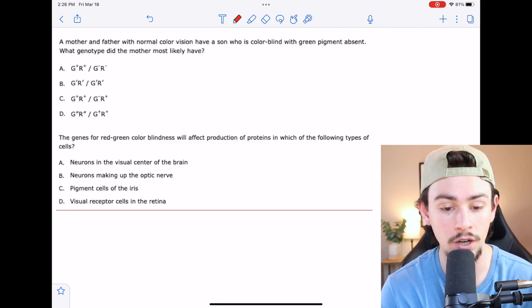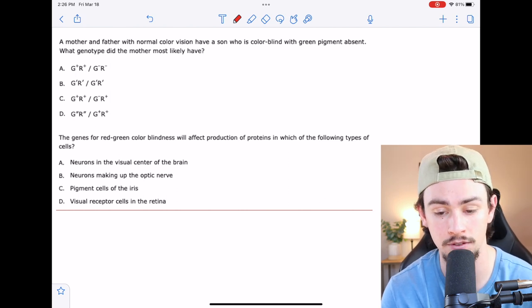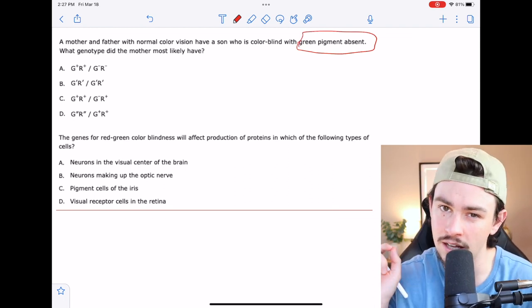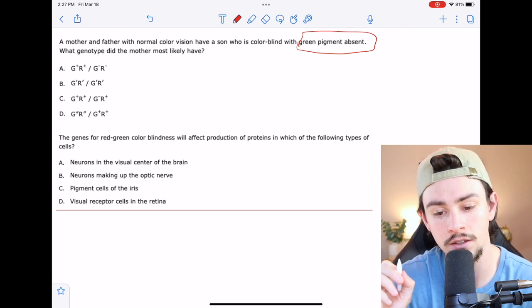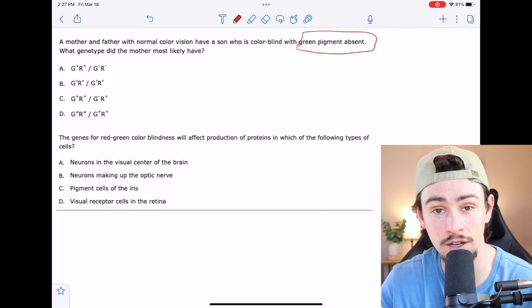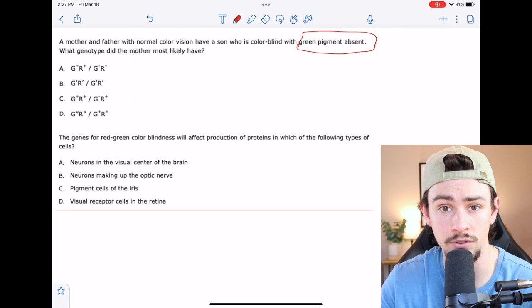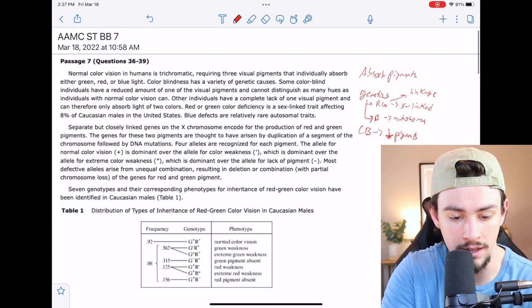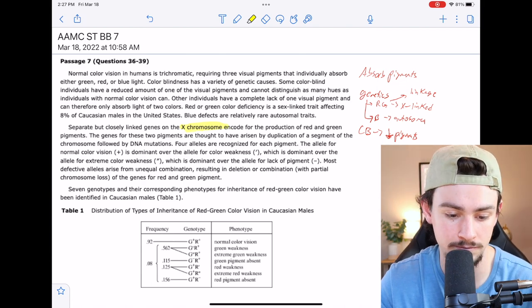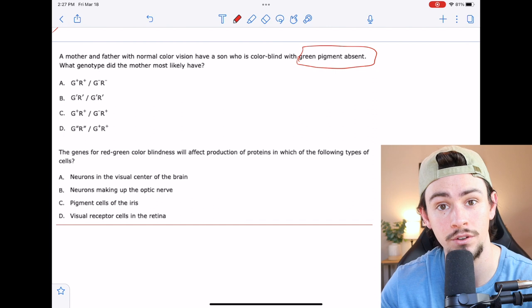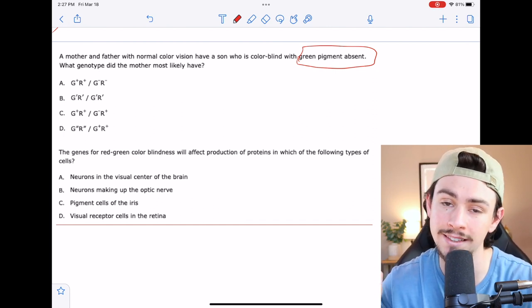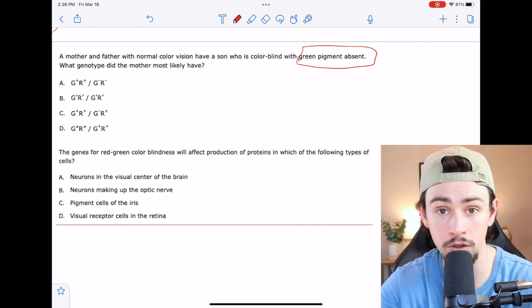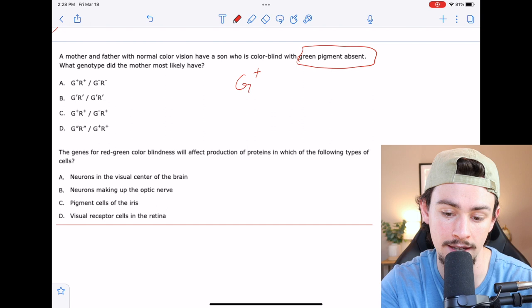Number 38 says a mother and father with normal color vision have a son who is colorblind with green pigment absent. What genotype did the mother most likely have? You've got to read into this question a good bit to see what they're really telling you. We know that green pigment absent is a sex-linked trait, but we don't know whether it's X or Y, or at least that's not given to us in the passage. But remember that they told us in the second paragraph that this was an X-linked disease.